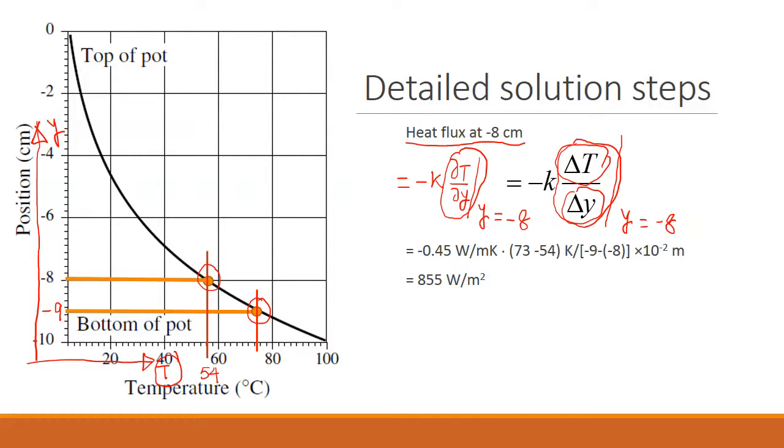As you can read from here, and this is about 73. So plugging in numbers, this is my thermal conductivity, and you can notice the units: watts per meter per degrees Kelvin. And the gradient here, the gradient is 73 minus 54 divided by minus 9 minus minus 8.